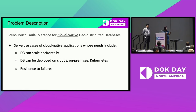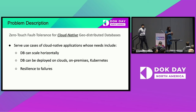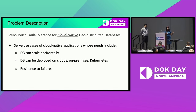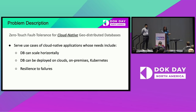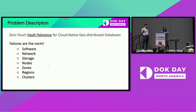What is a cloud-native database? It primarily serves the use case of modern cloud-native applications, which have three important requirements. The database needs to be able to scale. We want to be able to deploy it on clouds, on-premises, Kubernetes, virtual environments, or bare metal. And we need it to be resilient to failures. It is this requirement of resilience to failures that brings our need for zero-touch fault tolerance.